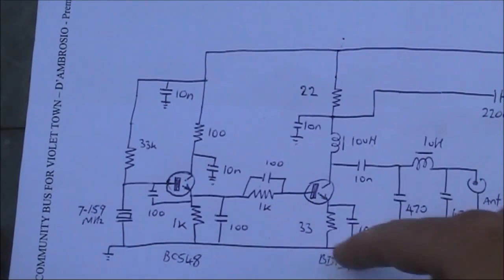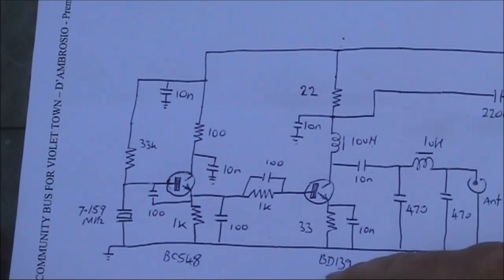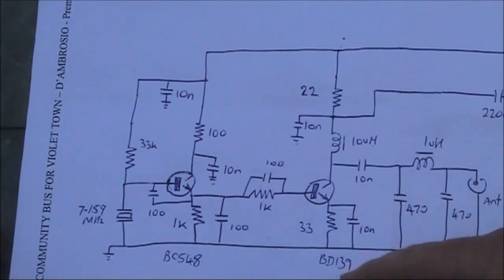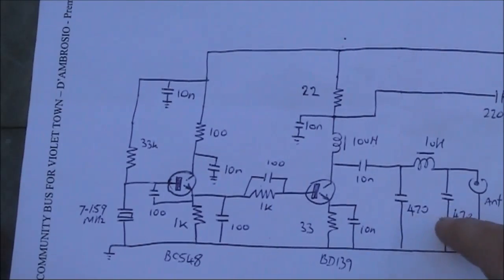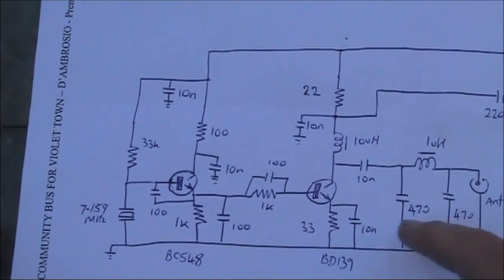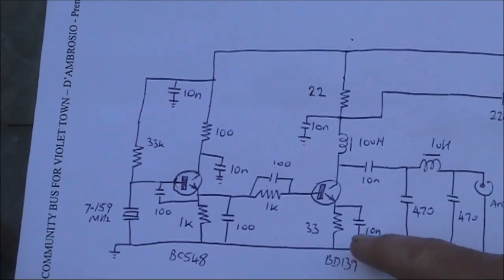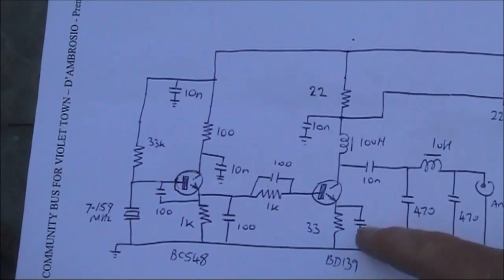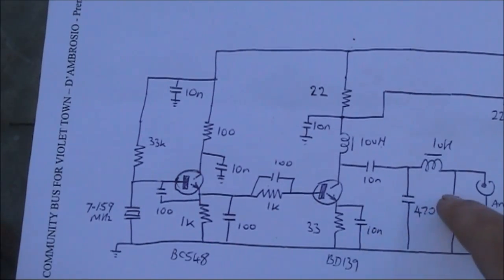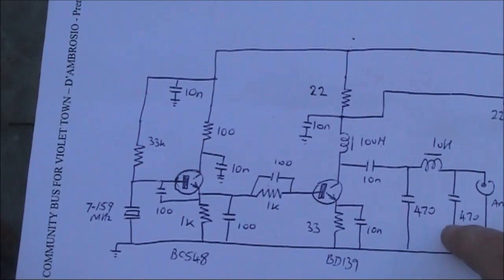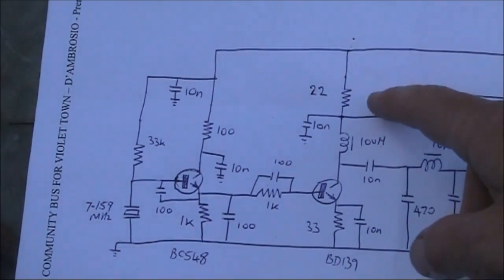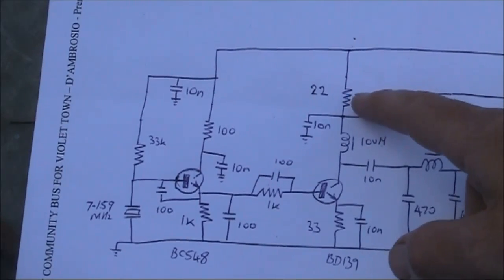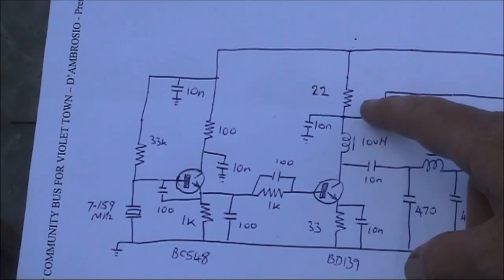The output from the oscillator goes into the final stage using a BD139. That would put out several hundred milliwatts, though if you adjust the values you might even be able to get 1 Watt or even a bit more. There's some low pass filtering provided by this single section PI network. The modulation is applied across this 22 ohm resistor.